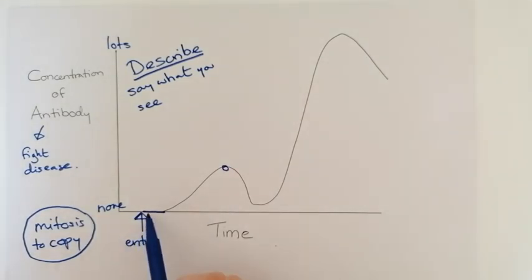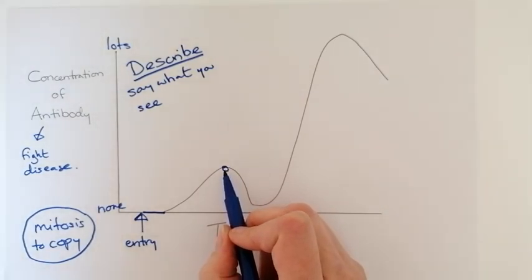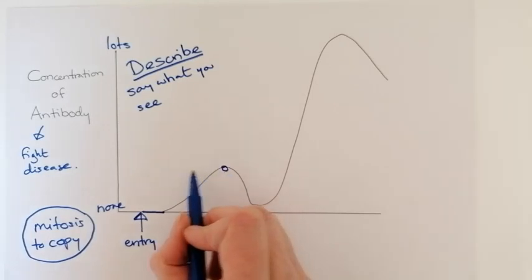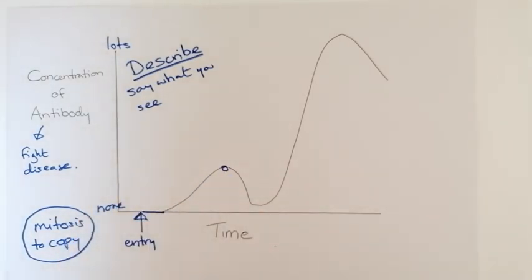So after this point there's a flat bit and it increases and then you would want to be quoting this number so at time and then read it off and antibody concentration blah blah blah it reaches a peak.